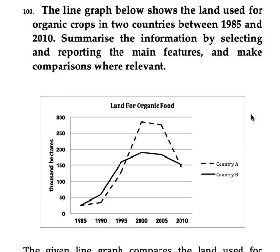Hello students, today I am going to discuss with you a graph which has been seen in the past in the academic IELTS writing test. This graph is a line graph and there are two countries shown. The line graph below shows the land used for organic crops in two countries between 1985 and 2010.